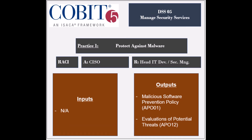The process has seven practices, and the first practice is to protect against malware. The entities responsible for this practice include the head of human resources, the head of IT development, and the information security manager. The entity held accountable is the chief information security officer. The practice receives no inputs but generates two outputs: the malicious software prevention policy to be used by the APO1 process, and the evaluations of potential threats to be used by the APO12 process.